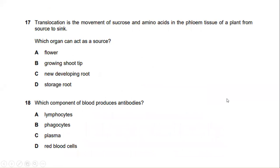Translocation is the movement of sucrose and amino acids in the phloem tissue of a plant from source to sink. Which organ can act as a source? So the answer for this is a storage root.